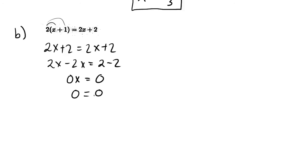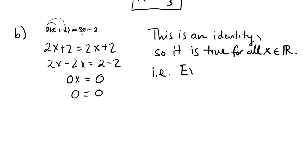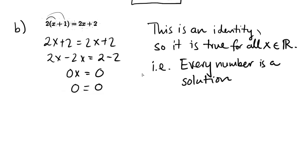And at this stage, some students start to panic, and they don't really know what's going on here. The truth is that this equation here is actually valid for every value of x. This is actually called an identity. This is not really an equation. This is an identity. This is true for all values of x. So, if we wanted to give an answer here, this is an identity, so it is true for all x in R. So, in other words, every number is a solution.